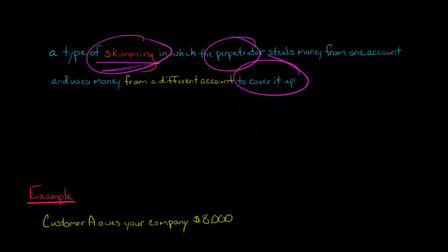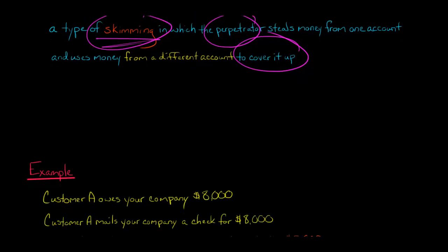Let me give you an example. So let's say that there's a customer, customer A. They owe your company $8,000, and then they mail your company a check for $8,000. So it should be that their balance goes to zero, right, because they just paid $8,000. They owed $8,000. They should have a balance of zero.